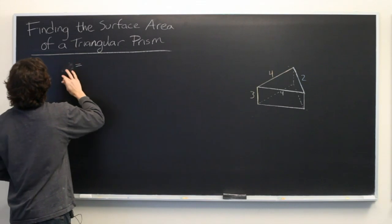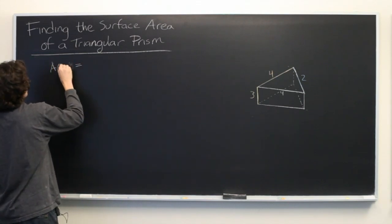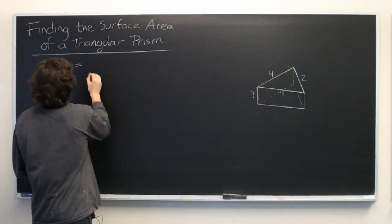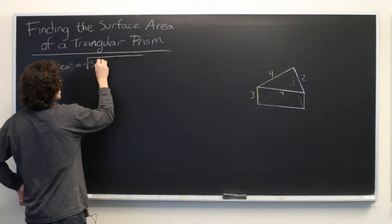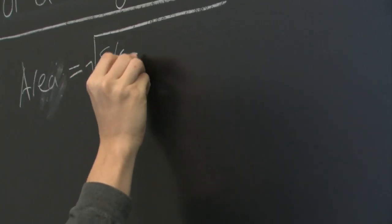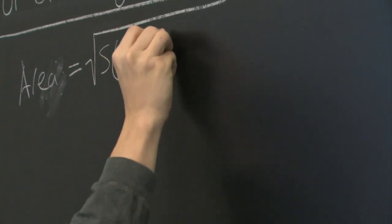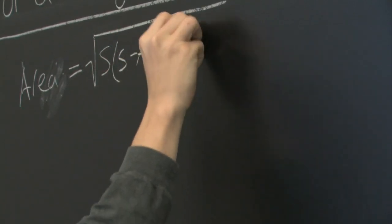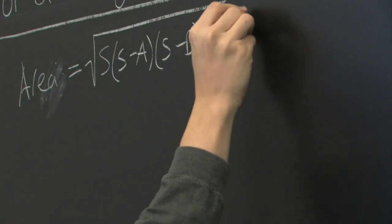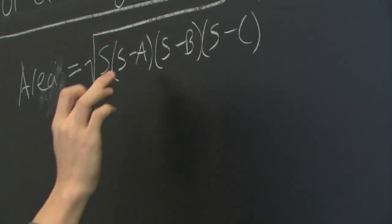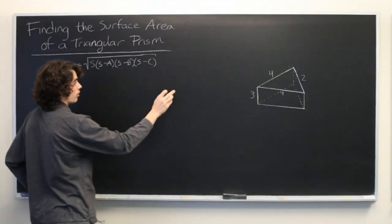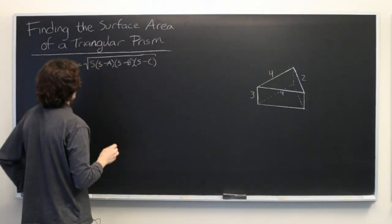Where the area is equal to the square root of S times S minus A times S minus B times S minus C. Where here A, B, and C correspond to the three sides of the triangles which we'll label in just a second.